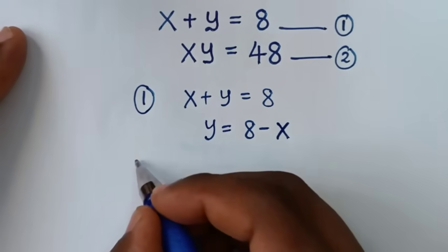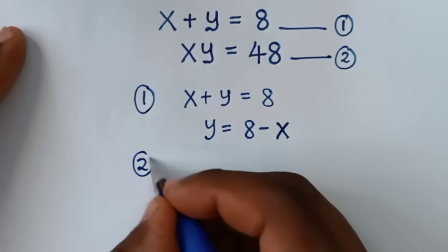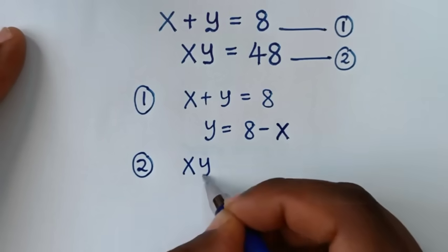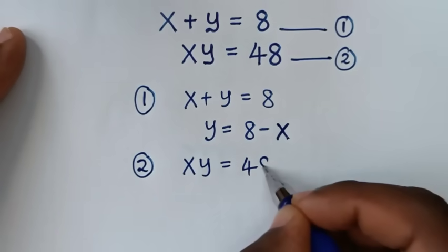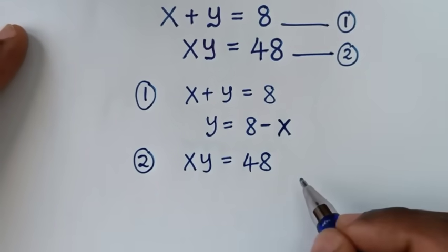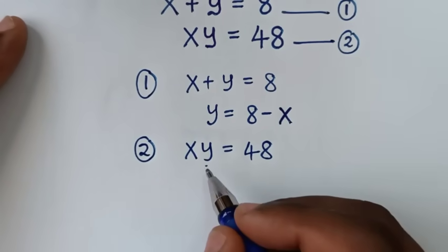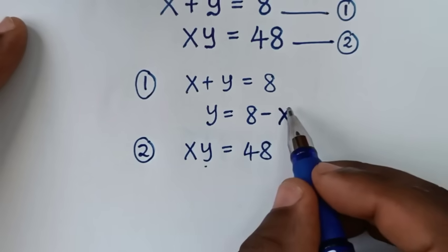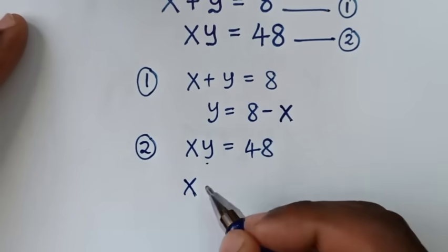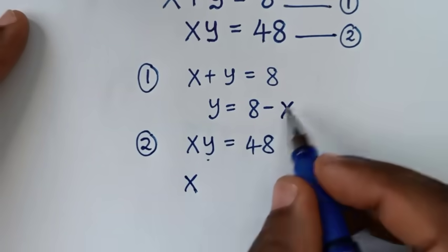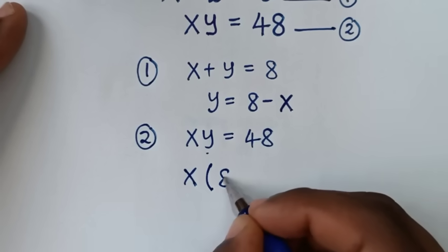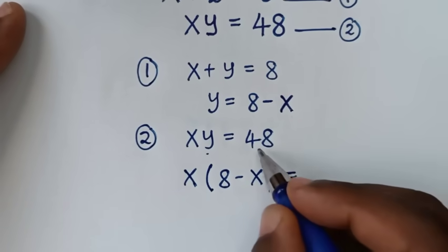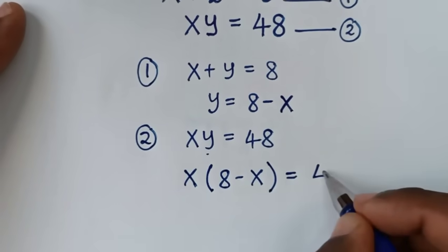So in the next step, from equation 2, whereas equation 2 it is x times y is equal to 48. So from here y, we'll substitute this 8 minus x. So it will be x bracket 8 minus x bracket is equal to 48.